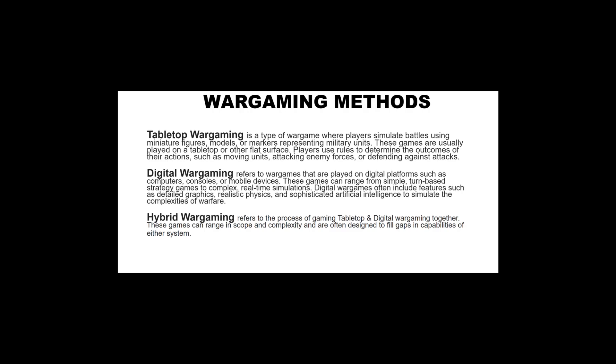Now we'll go over the wargaming methods. I'm going to cover the main ones I'm familiar with, which will encompass most wargames you'll encounter. There are three different types: tabletop, digital, and hybrid wargaming. Tabletop wargaming is like board games — think Warhammer 40K for science fiction. It usually involves a map or board of some type, some miniatures or props representing units or vehicles, and a rule set.